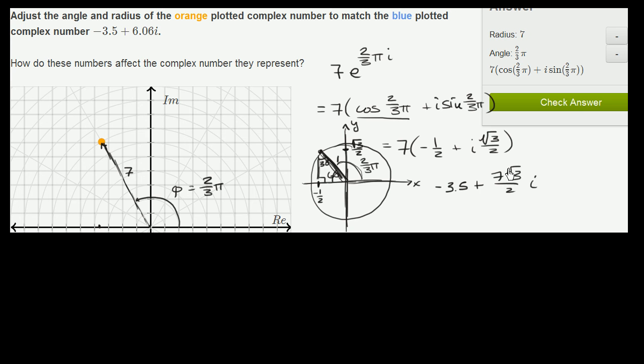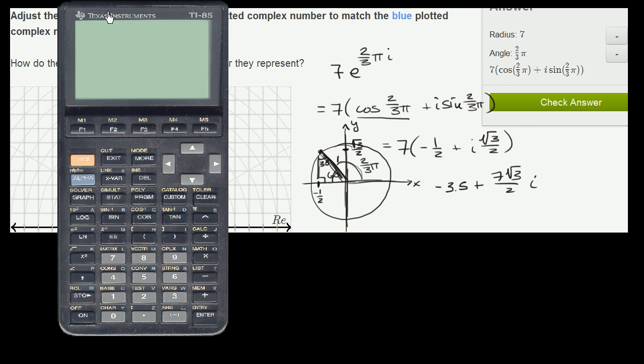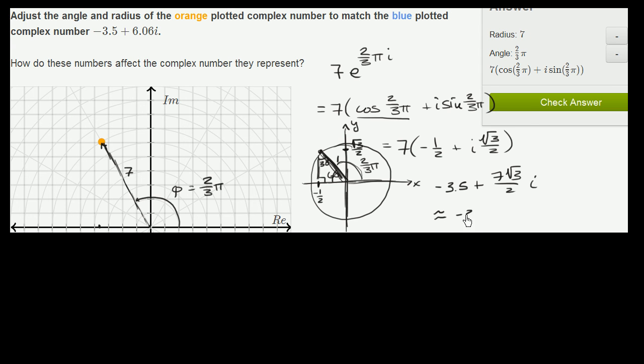And I'll also get a calculator out to evaluate this and see if it is roughly 6.06. So I'll get my trusty TI-85 out. And then I want to evaluate 7 times the square root of 3, and then that divided by 2 is indeed 6.06 if we round to the nearest hundredths. So this is approximately equal to negative 3.5 plus 6.06i, which is exactly the complex number that we started with.